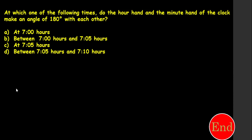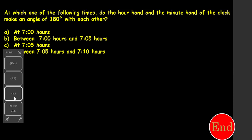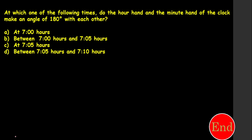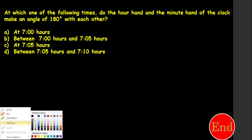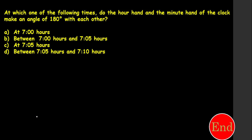Today the questions are taken from clocks and calendar. The first question is based on clocks. We have some formulas for finding answers for clocks as well as calendar. This question is based on a clock — they are given that a 180 degree angle is made, and we need to find which option is correct.